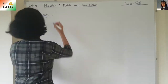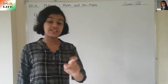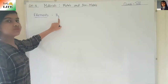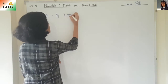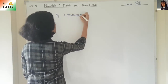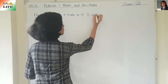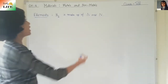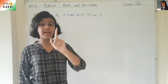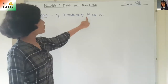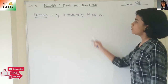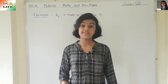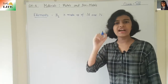For example, let's take N2. N2 is nitrogen gas. N2 is made up of 2 nitrogen atoms — N and N. Both atoms are the same kind. Molecules that are made up of only one kind of atom are known as elements. Another example is O2, oxygen gas, which is also made up of 2 oxygen atoms.